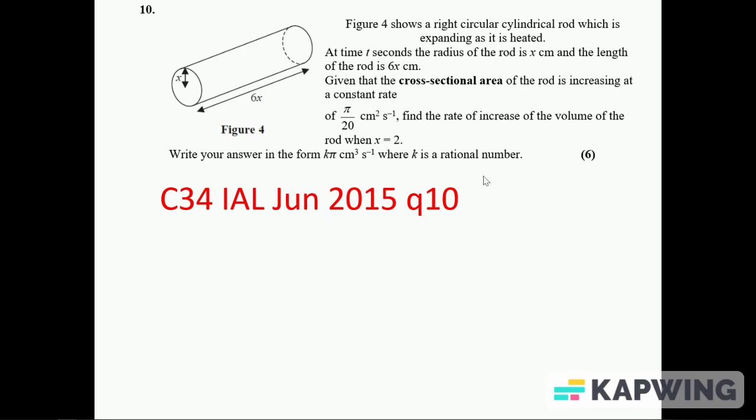Right, can we go through question C34 June 2015? We've got a right circular cylindrical rod. The 'right' bit just means it's at a right angle, so it's not cut off at an angle.